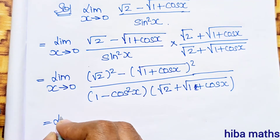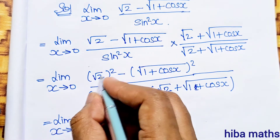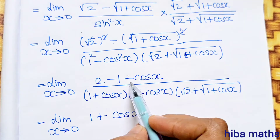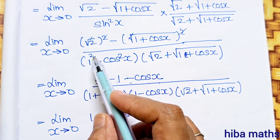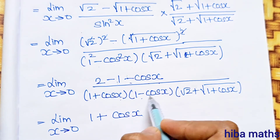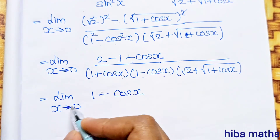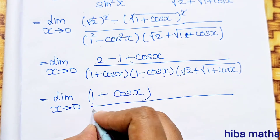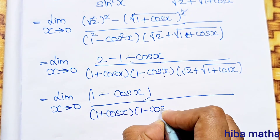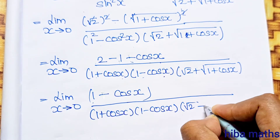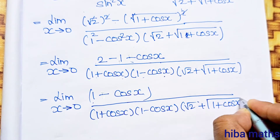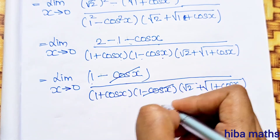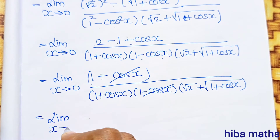In the next line: limit x turns to 0. After cancellation, we get (1 minus cos x) terms with (1 + cos x)(1 minus cos x) in denominator. The (1 minus cos x) terms cancel, leaving only the balance terms remaining.